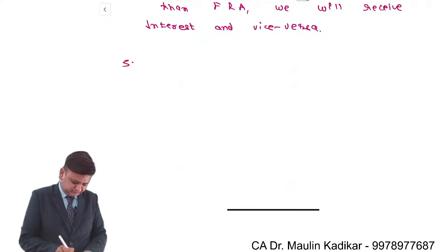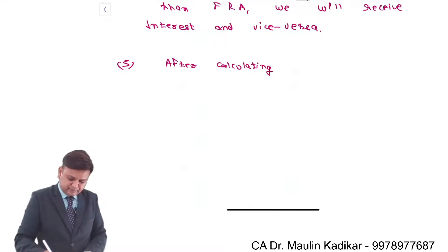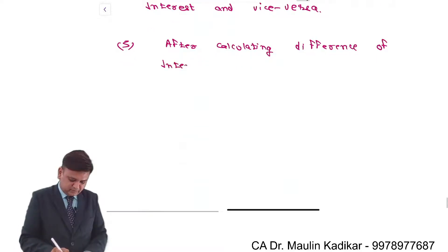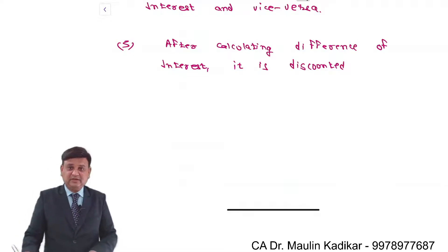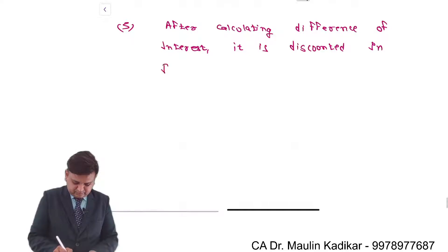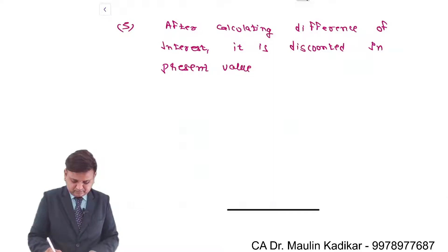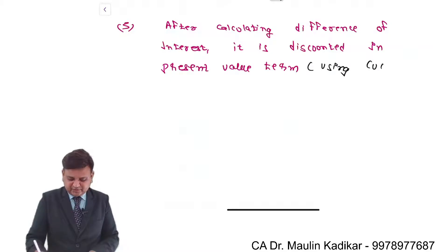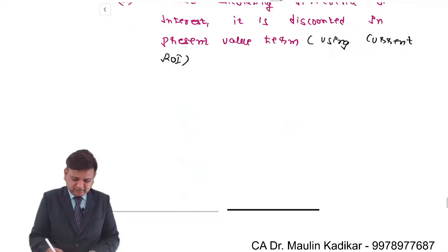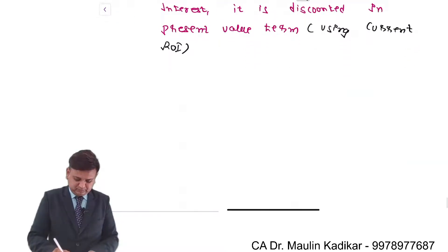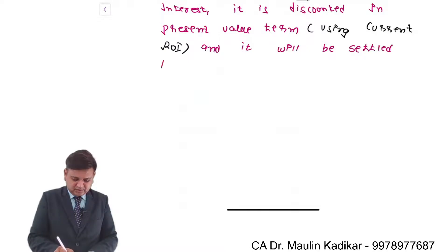Fifth point: After calculating the difference of interest, it is discounted in present value terms using the current rate of interest, and it will be settled between both parties.